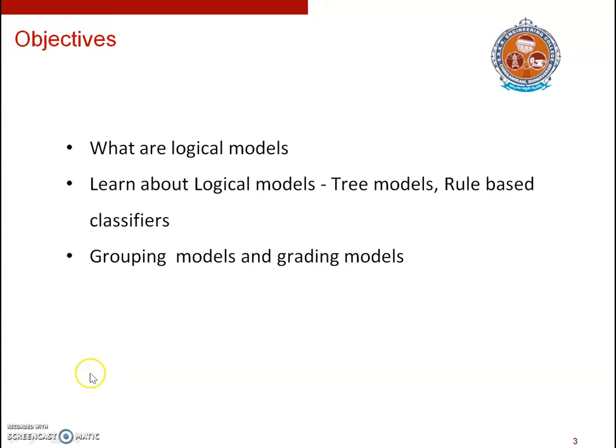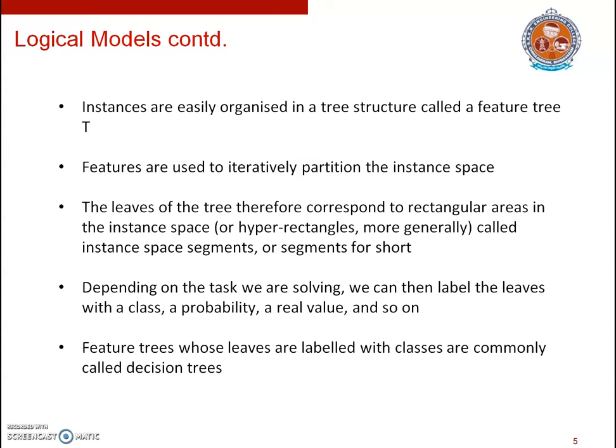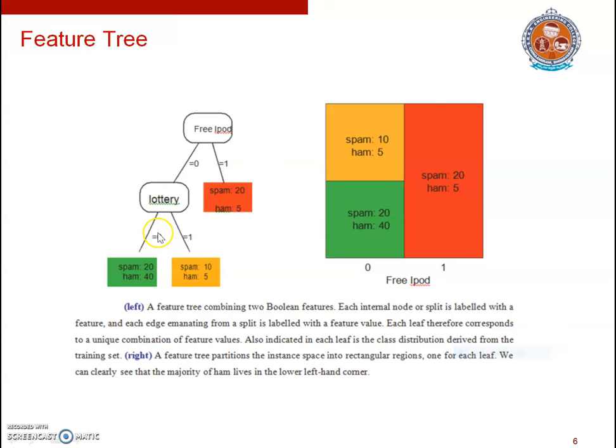Instances in our dataset can be easily organized in a tree structure called a feature tree. Features are used to iteratively partition the instance space. The leaves of the tree therefore correspond to rectangular areas in the instance space, also called hyper rectangles. Depending upon the task we are solving, we can label the leaves with class names, probability values, or real values. Feature trees whose leaves are labeled with class names are commonly called decision trees. This is an example of a feature tree.